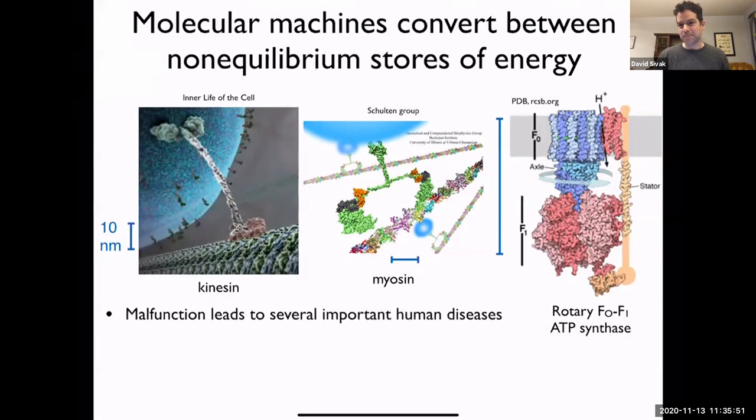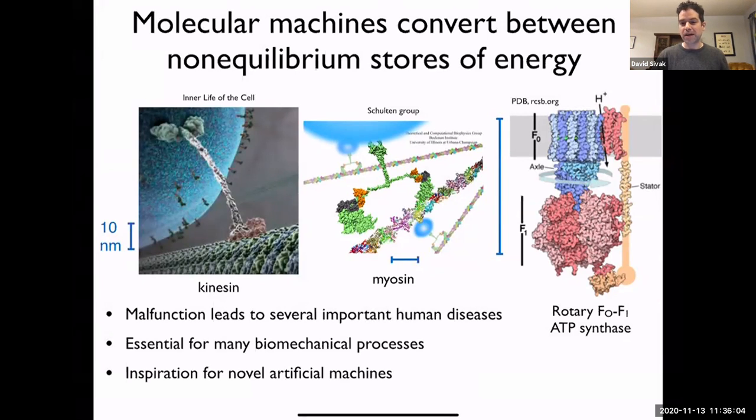We like studying them for various reasons. When they malfunction, there are various human diseases that result. Essentially, any interesting biological process involves them at some basic level. When people are making novel synthetic molecular machines, they often look for inspiration to what biology has evolved. And finally, I just think it's super cool that biology has been able to evolve machines that really at some basic level look an awful lot like the kinds of machines that engineers create at the human scale, but as I'll argue, really have some very important meaningful differences from them.